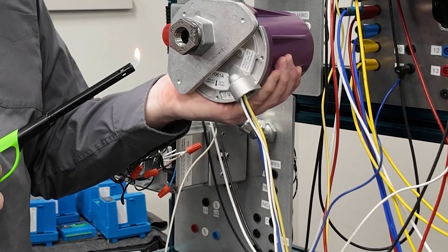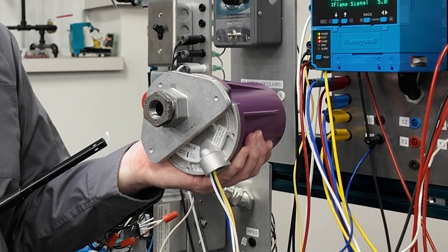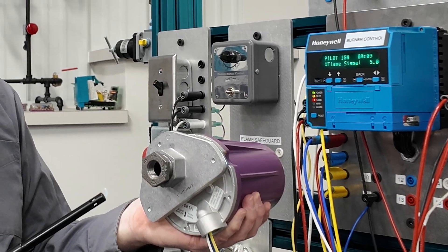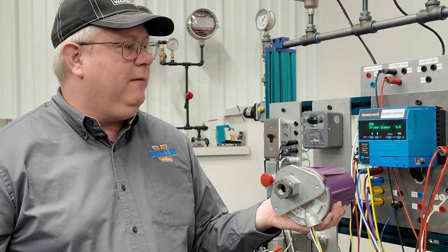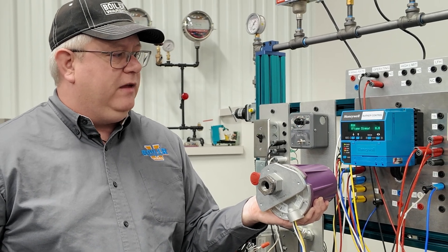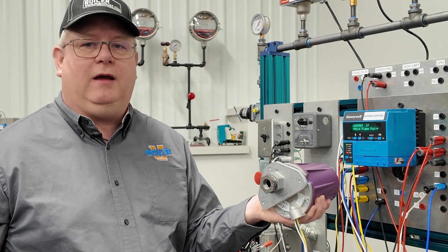For the full duration that we're running, it's going to be running its self-check cycle. But in the event that we lose flame, it's going to trip out with the normal flame timing.